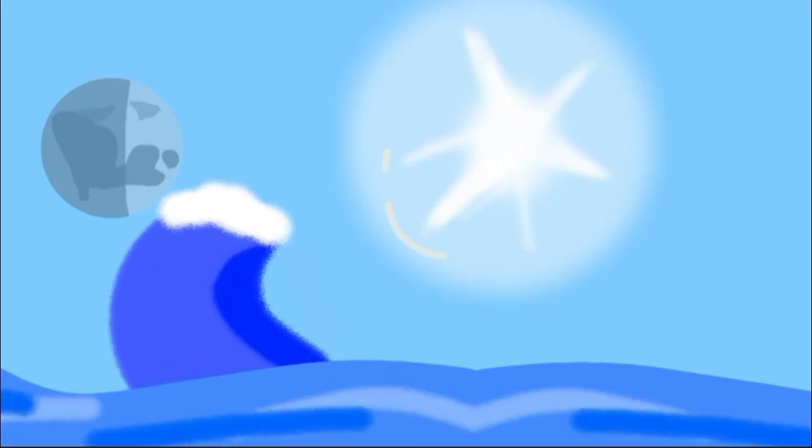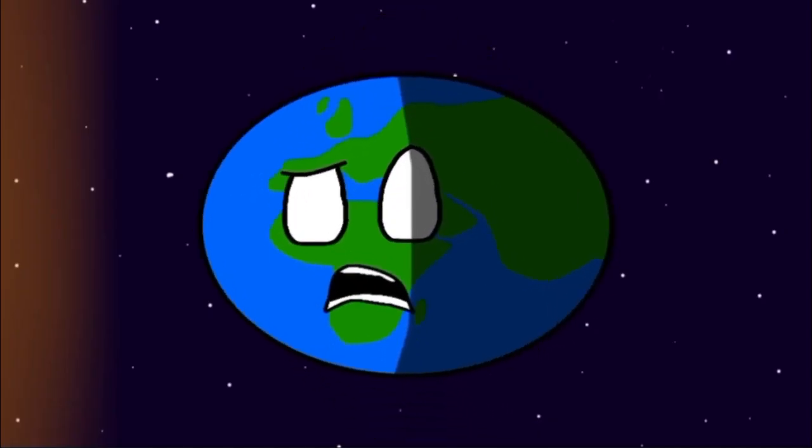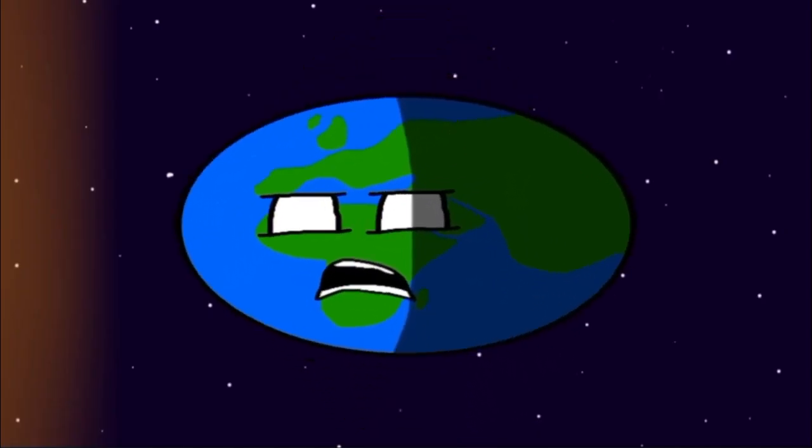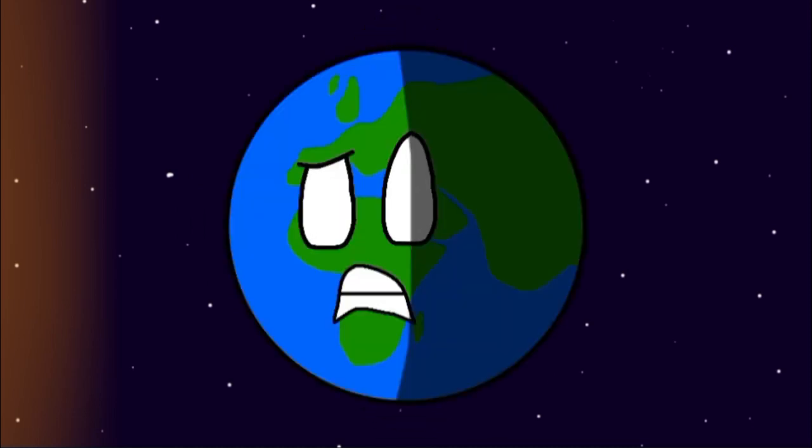Well, tides are formed due to my gravity pulling the water on your surface, away from your surface, and towards me. But since you have stronger gravity, you just pull it back towards your surface. Oh, they are? I don't believe you. Well, how do you think they are formed, then?